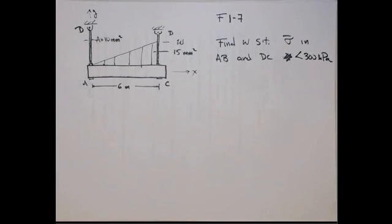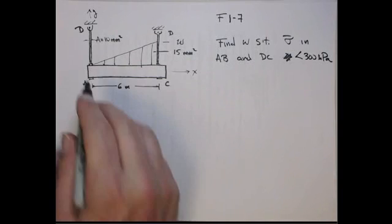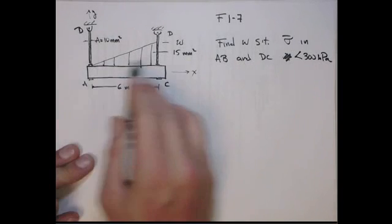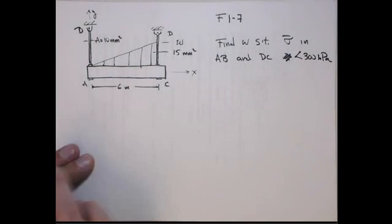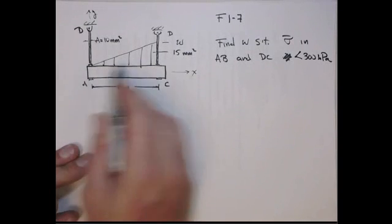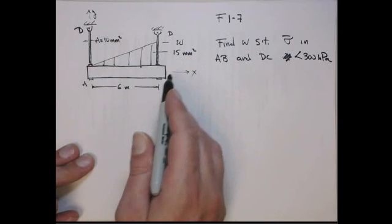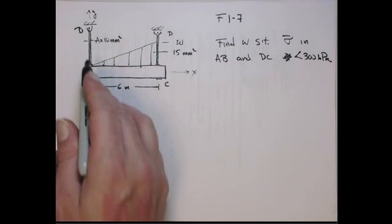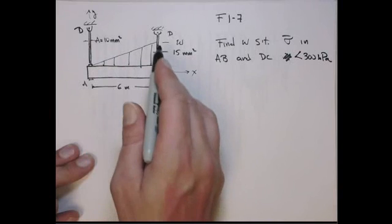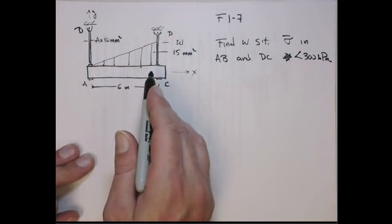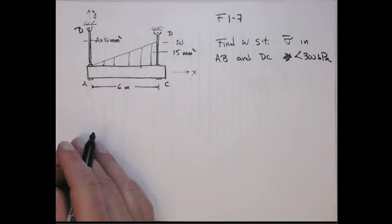And then we'll see we can solve for W such that the stresses, one of the two elements will be the limiting case. And then that's the one that we have to make sure does not exceed 300 kilopascals. So first, the first trick is to find the normal stresses in AB and DC. We're not getting the reaction force in this beam, but we'll draw a free-body diagram of this beam to actually get the normal forces exerted on AB and DC.